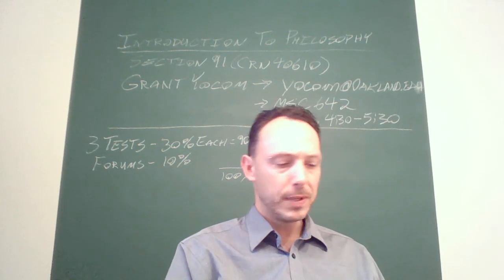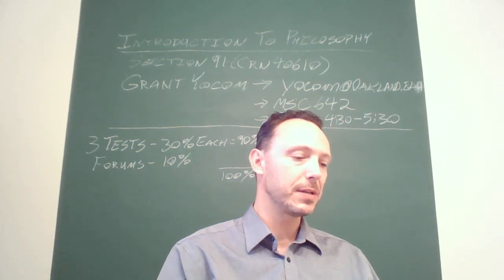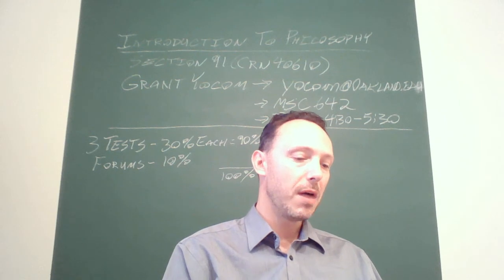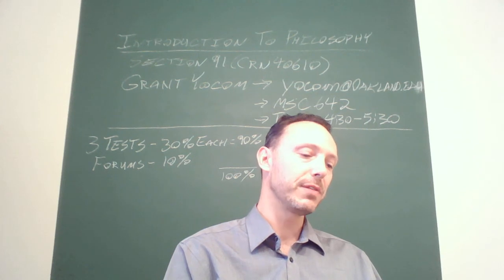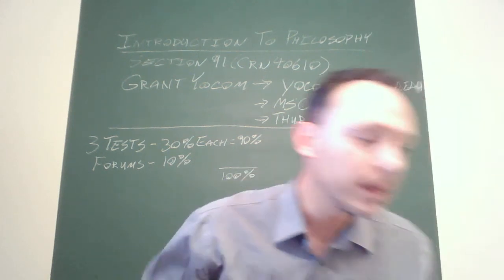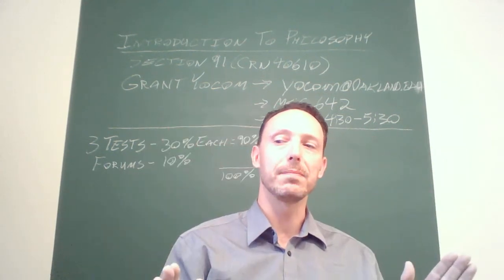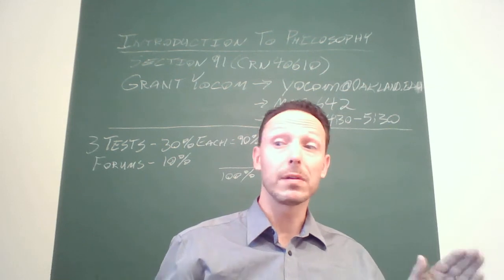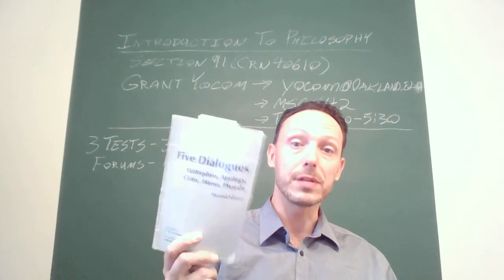The course description says it is a study of the main types and problems of Western philosophy. The readings are chosen to illustrate the development of Western thought from the ancient Greeks to the present, offered every semester. It satisfies the university general education requirements in the Western Civilization knowledge exploration area. The reason I'm reading through the course description is because this is the box that this course needs to fit in — these are the things the course needs to do.